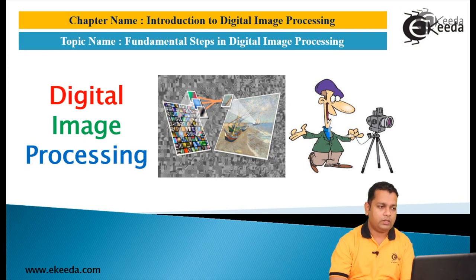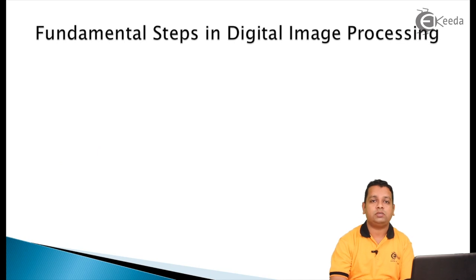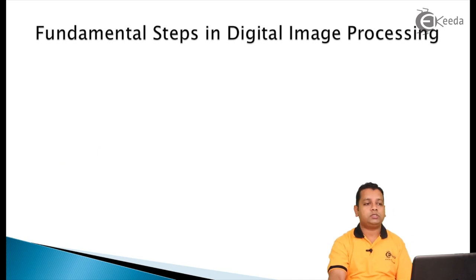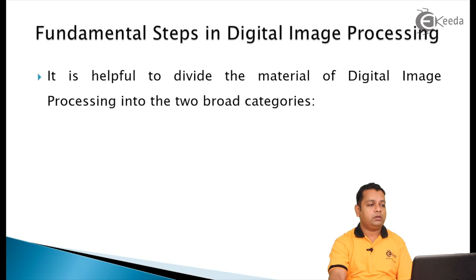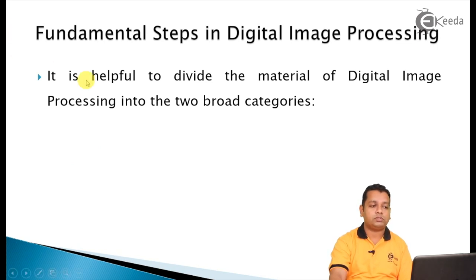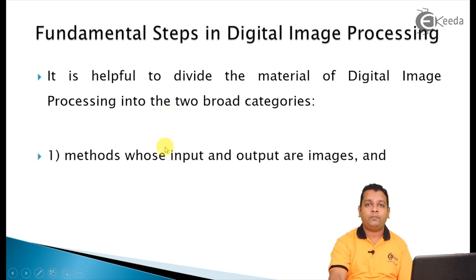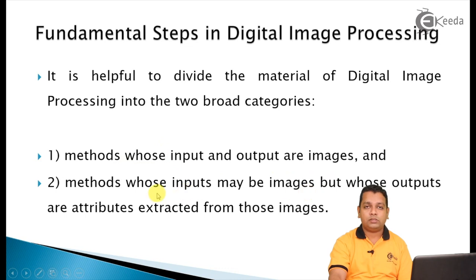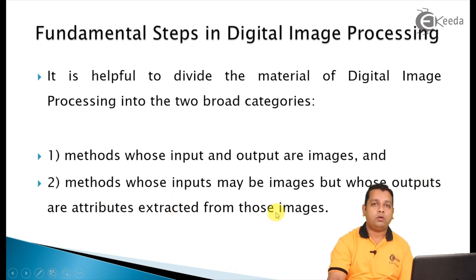The fundamental steps in digital image processing can be divided into two broad categories. The first category involves methods whose input and output are images. The second category involves methods whose inputs may be images but whose outputs are attributes extracted from those images.